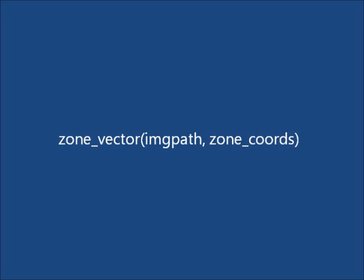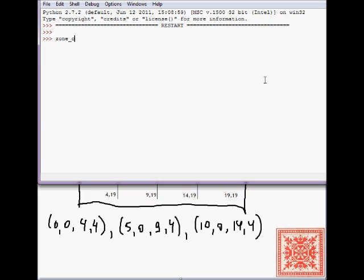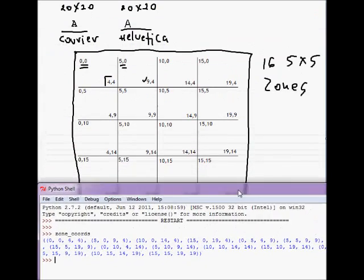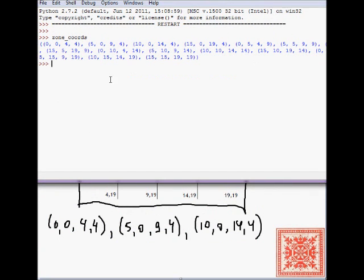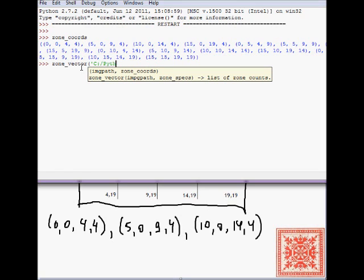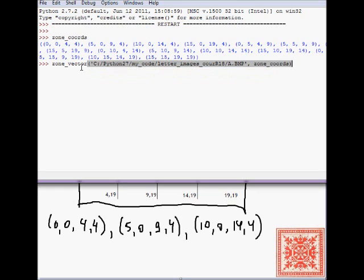So this is the first function that we will implement in this project, and that's a zone vector. So let's say that we have defined zone coordinates as this variable that encodes 16 zones. Then the zone vector function that we will implement takes an image path. And then we will calculate the path to a 20 by 20 bitmap, black and white, bitmap with a character in a particular font. So let's say I have it in my machine, say for example in letter images courier r18, a.bmp. And then the second argument is zone chords, and it will compute the zone vector, a 16 zone vector of this image. So this is the image, and then that was the zone vector.